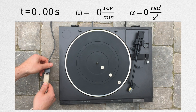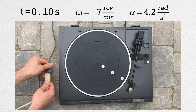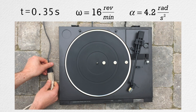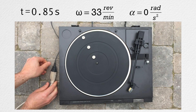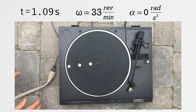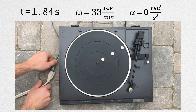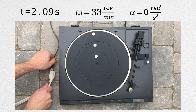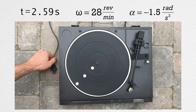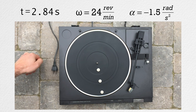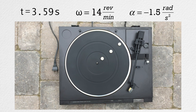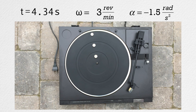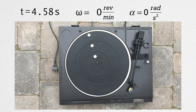Let's start by looking at three mints on a turntable of a record player. When we plug in the record player, it takes slightly less than one second to uniformly speed up to its constant angular velocity of 33 revolutions per minute. And then, when we unplug the turntable, it takes slightly more than two seconds to uniformly slow down to a stop.